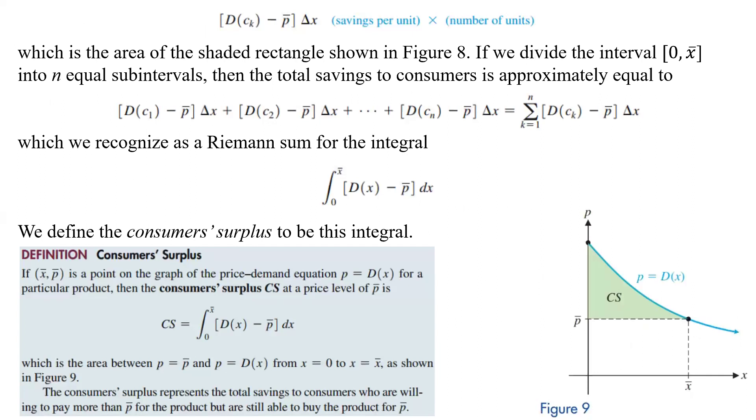And then if we divide that interval 0 to X bar into N equal subintervals, then this total savings to consumers is going to be approximately, we're going to have the C1, the C2, the C3, all up to the CN, and we're doing all those. And so that's going to be basically the sum of D sub K minus P bar delta X from 1 to whatever N is.